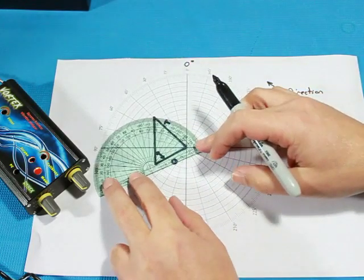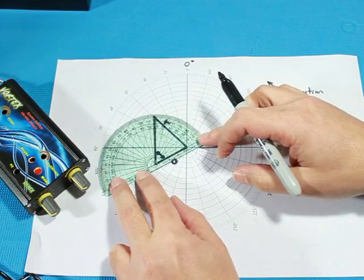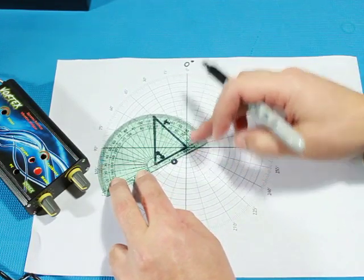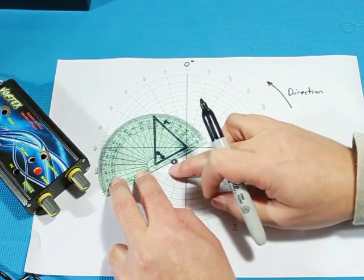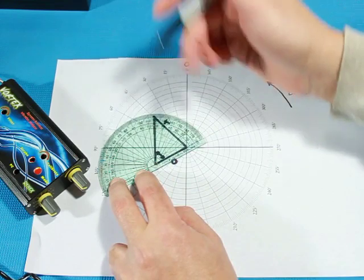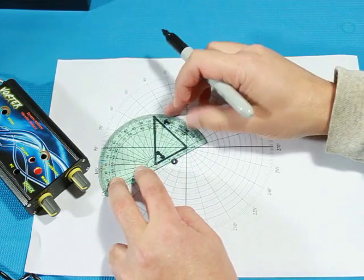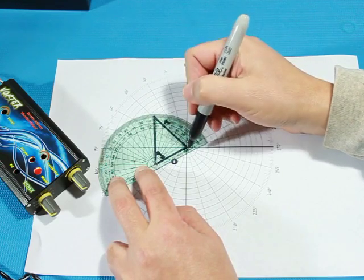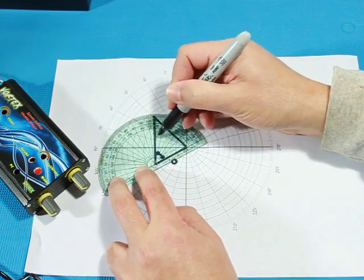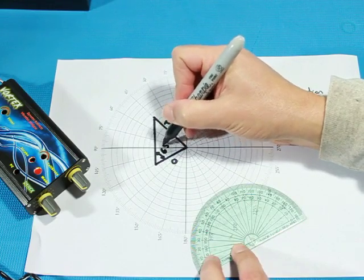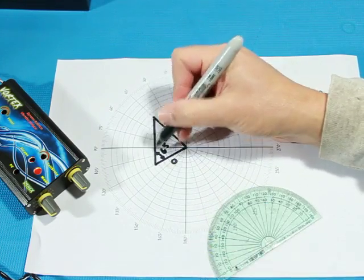So put my protractor over that triangle. So I'm measuring from the original imbalance vector to the correction vector. It measures around 65 degrees from this direction to there. So that's 65 degrees, which is the included angle.